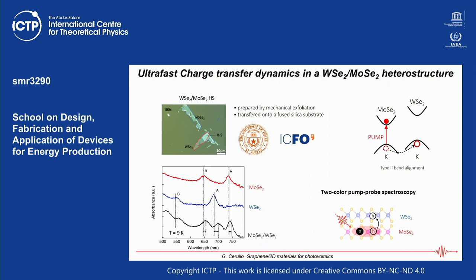Q: Regarding light propagation direction in graphene? A: Light can go in both ways. Typically, with a single layer of graphene you go perpendicular and see the 2% absorption. But in the modulator I showed, you use an evanescent wave that sees the graphene, so light can also go transversely along the layer.